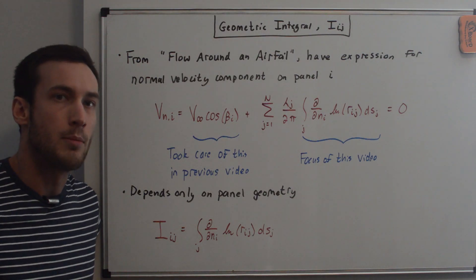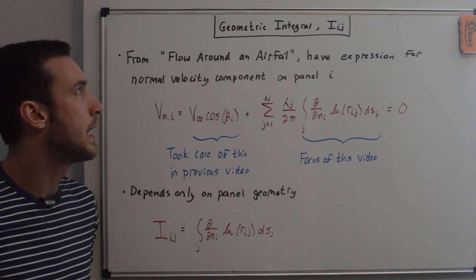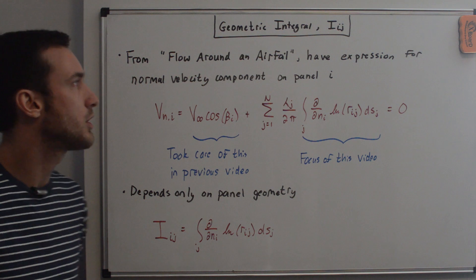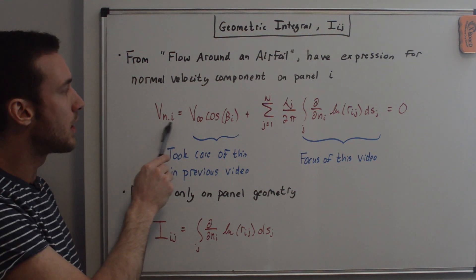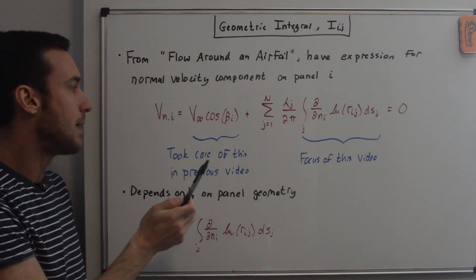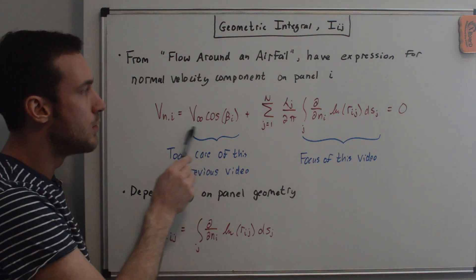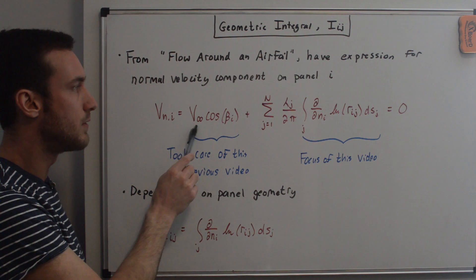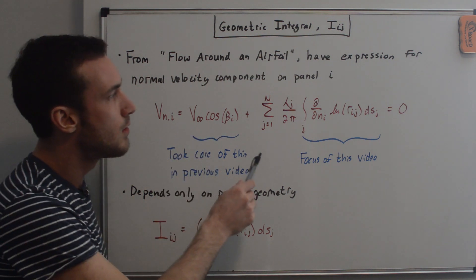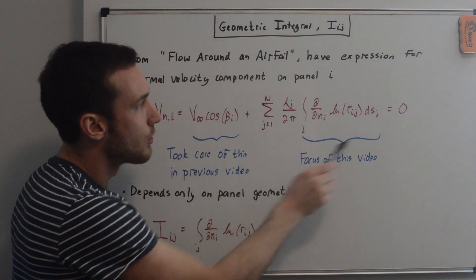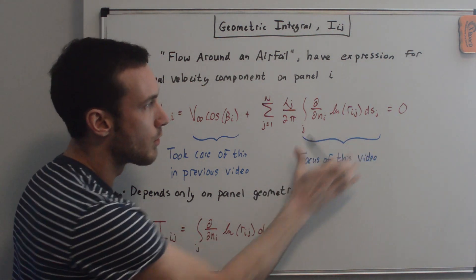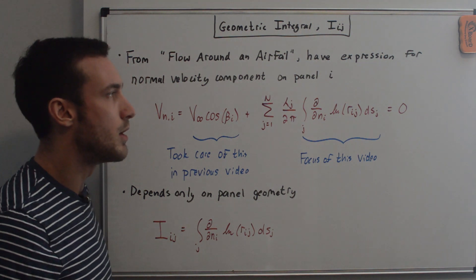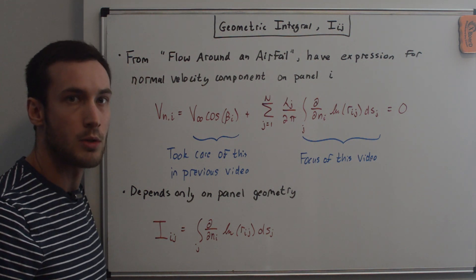Hey everyone, in this video we're going to be talking about the geometric integral I_ij. From my flow around an airfoil video, we got an expression for the normal velocity component on the i-th panel. In the previous video we took care of the uniform flow term, ending up with an expression in terms of two knowns: V_infinity and beta_i. In this video we're going to look at the source panel term — specifically this integral term — and evaluate the partial derivative.